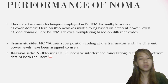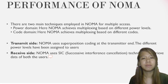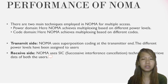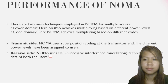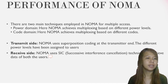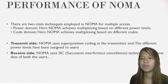In the performance of NOMA, we are going to talk about the transmit site and receive site. There are two main techniques employed in NOMA for multiple access: power domain, where NOMA achieves multiplexing based on different power levels, and code domain, where NOMA achieves multiplexing based on different codes. At the transmit site, NOMA uses superposition coding at the transmitter, and different power levels are assigned to users. The base station transmits superposed signals to user 1 and user 2. User 2 uses high gain and user 1 uses low gain, as shown in the figure.